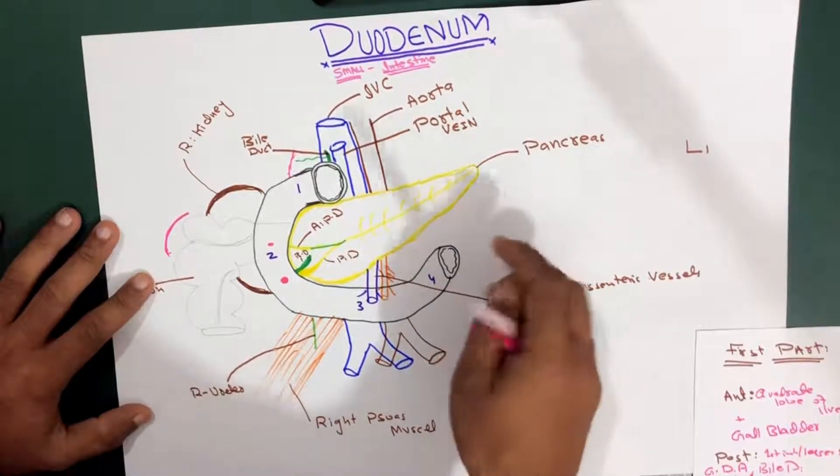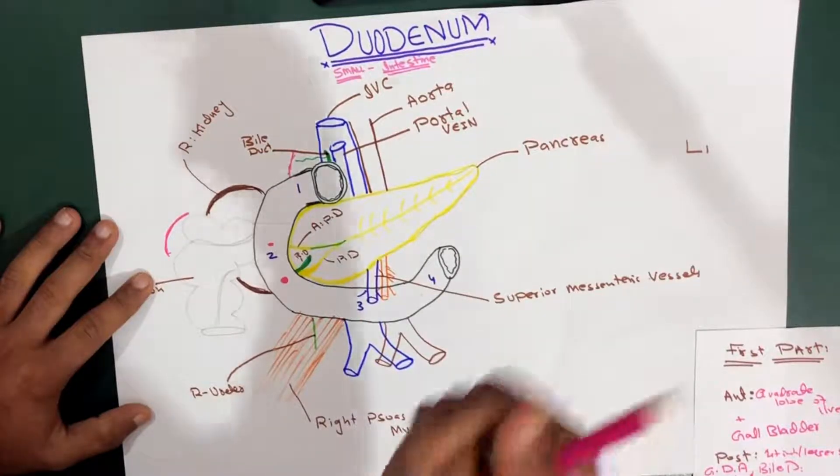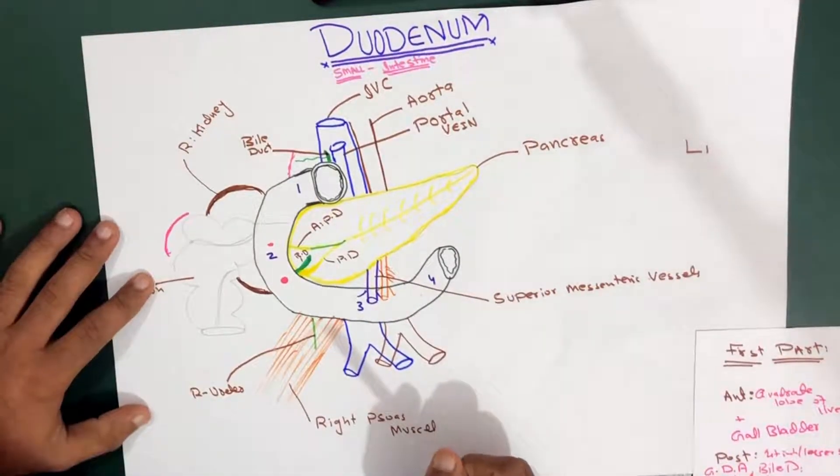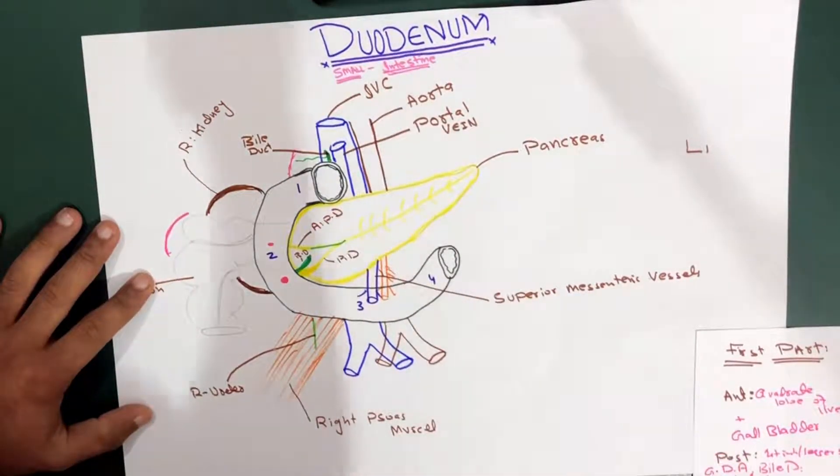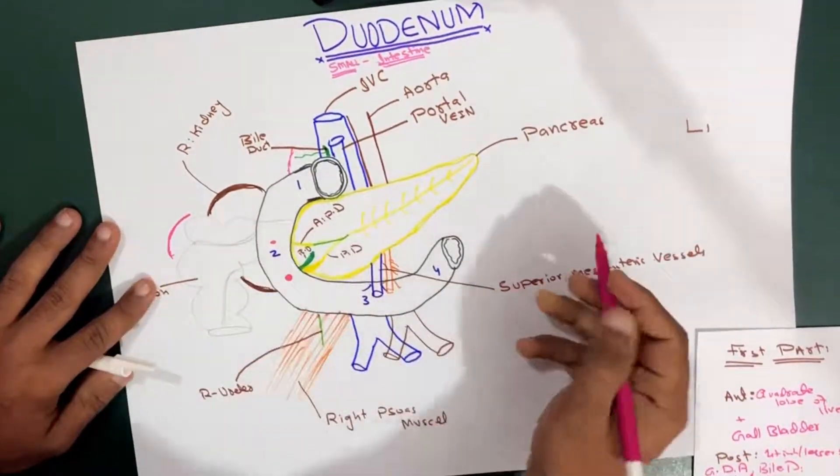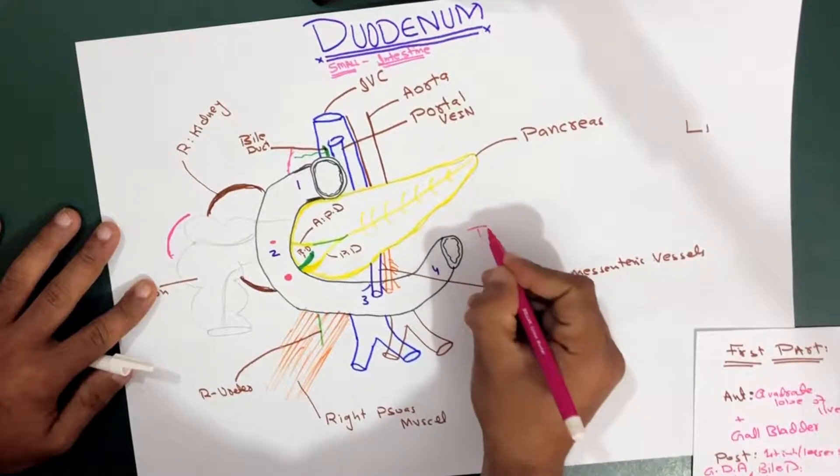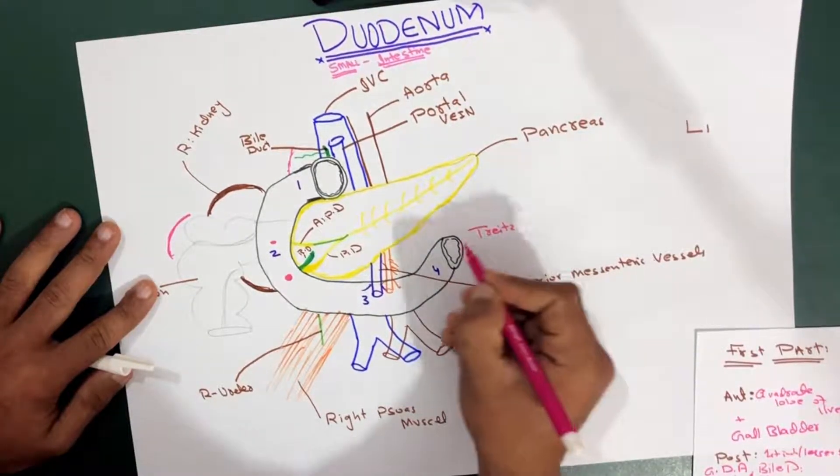This flexure is actually held in position by a peritoneal fold, and that one is also called the ligament of Treitz. I'll spell it: T-R-E-I-T-Z.